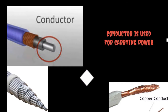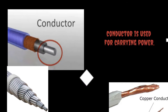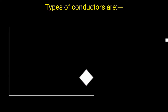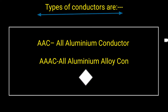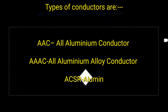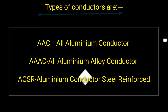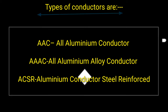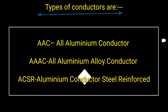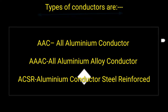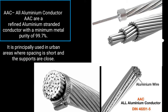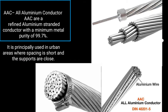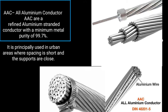Conductor is used for carrying power. Types of conductors include: AAC – All Aluminium Conductor, AAAC – All Aluminium Alloy Conductor, ACSR – Aluminium Conductor Steel Reinforced, and AACR – All Aluminium Conductor Refined.